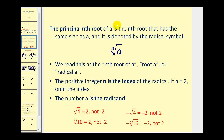That leads us to something called the principal nth root. The principal nth root of a is the nth root that has the same sign as a, and it is denoted in this way. We read this as the nth root of a, root a, or radical a. The positive integer n is called the index, and if n is equal to two, we usually don't include the index. The number a is called the radicand.